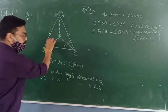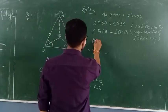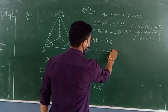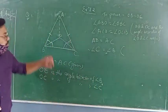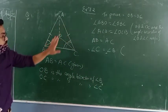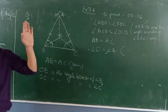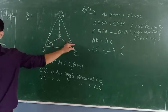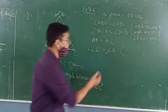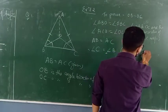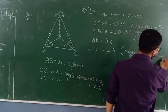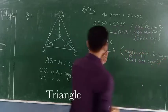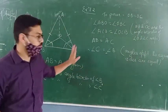Because AB equals AC is given in the question, you can say angle C and angle B are both equal. If AB equals AC, then angle C equals angle B. The reason is: angles opposite to equal sides are equal.